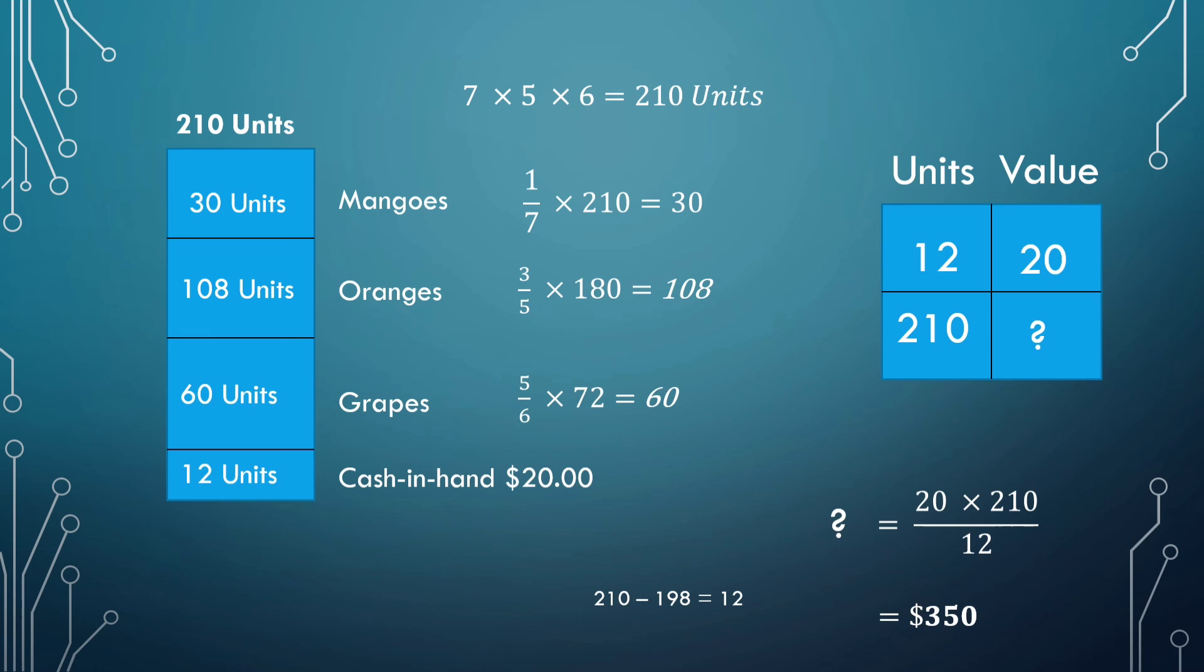This concludes the problem. We now know what was Sunita's allowance from the beginning. Sunita initially had $350 and this represents her allowance.